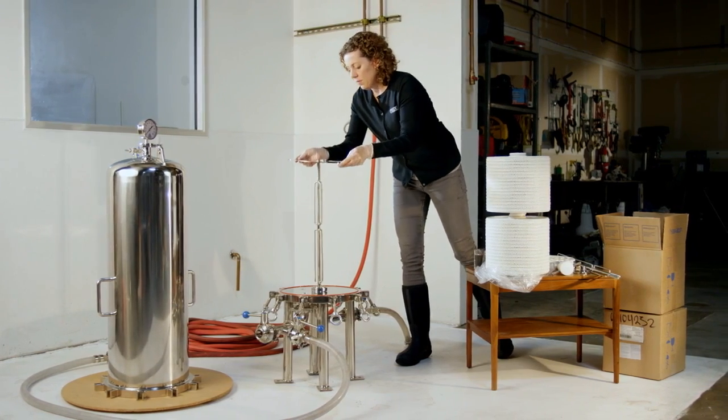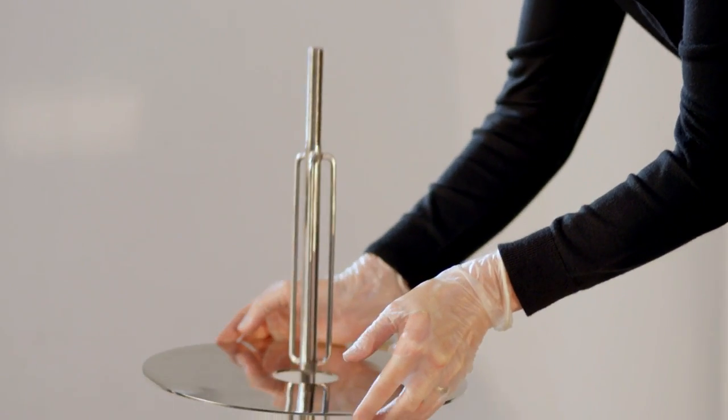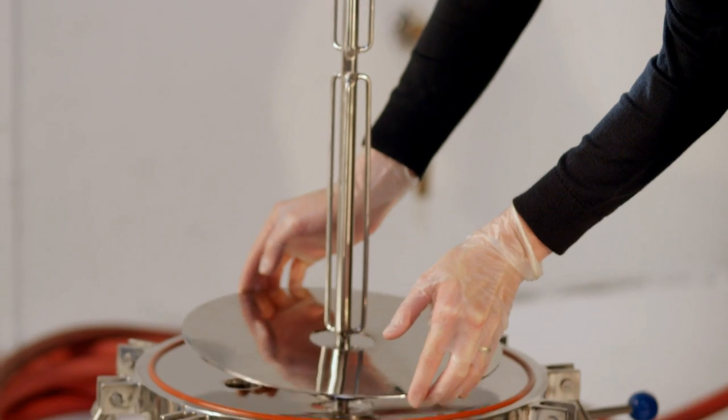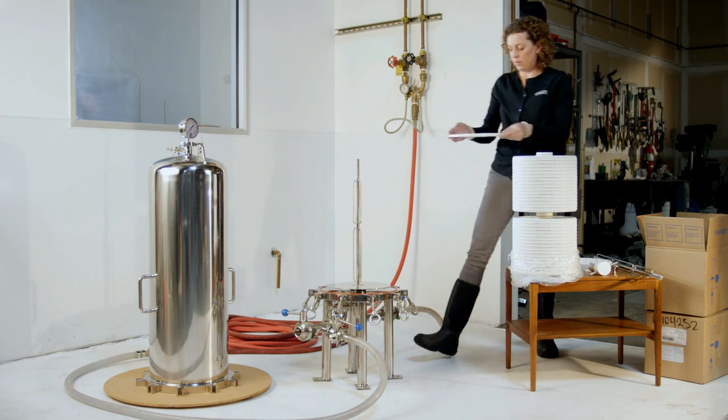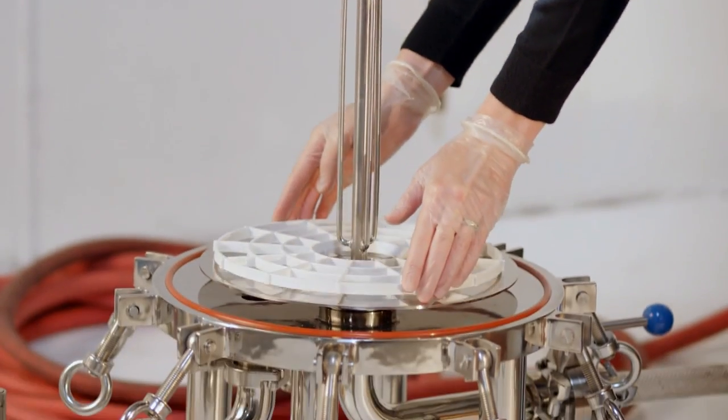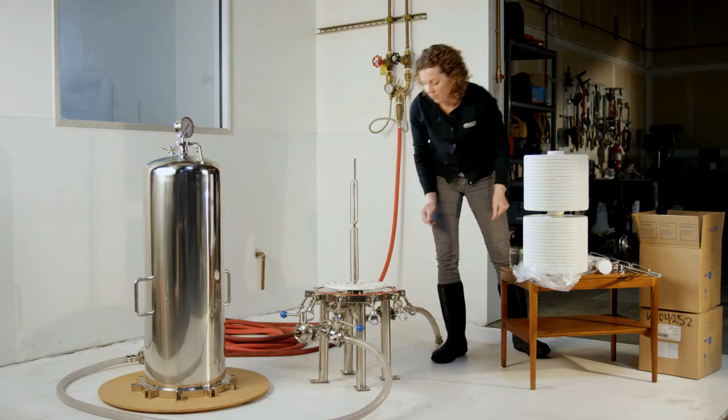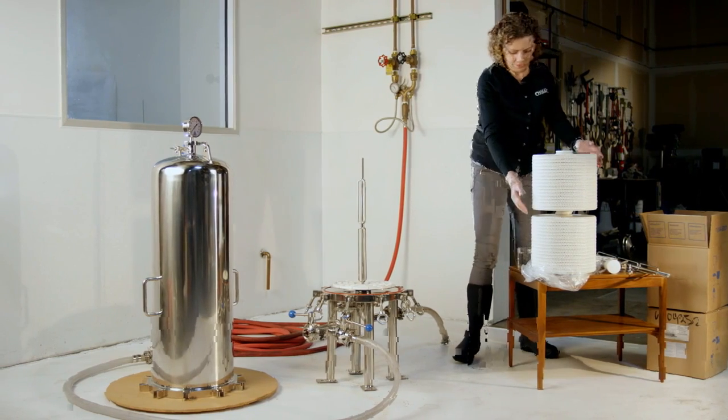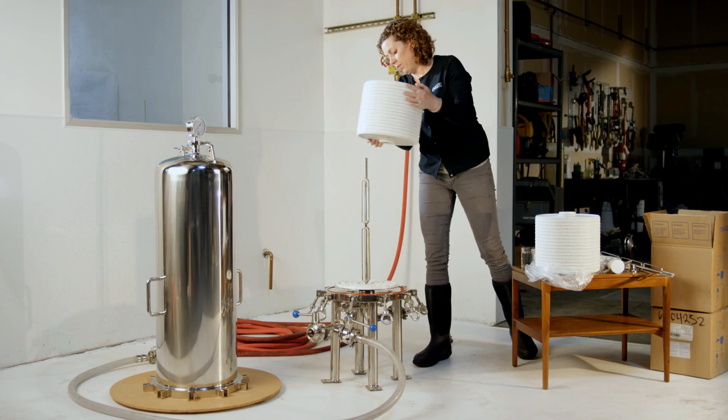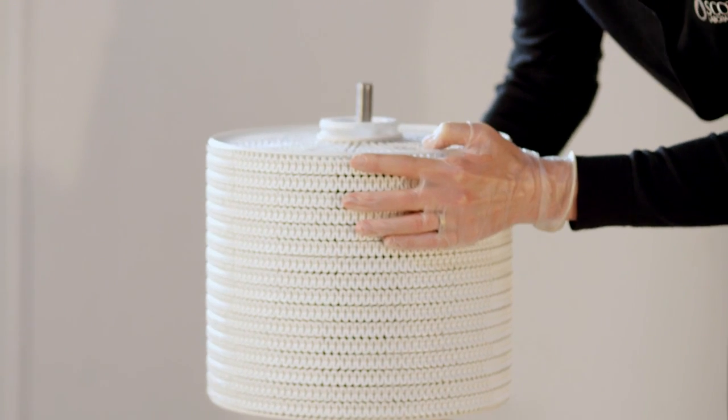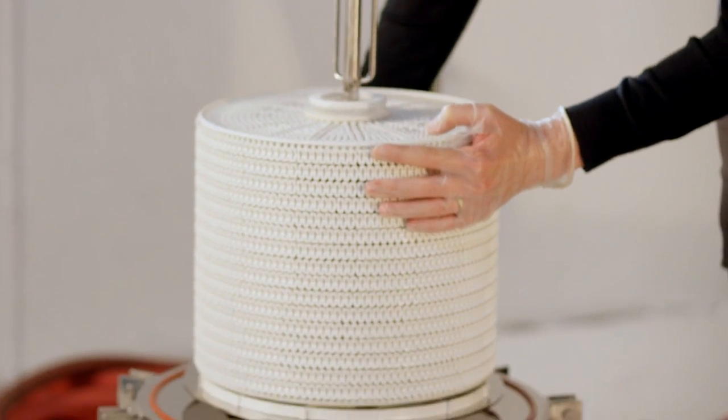Prior to removing modules from packaging, guide deflection plate onto port. Place first-end back flush plate onto deflection plate. Remove a single module from its box and carefully remove from its plastic wrap. Slowly guide module down center post to rest on top of end back flush support plate.